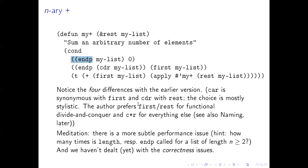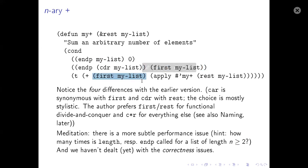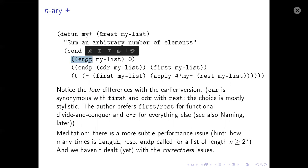If the list is not empty and the CDR of the list is empty, then there must be only one element in the list, in which case return the first element. Otherwise, pick up the first element and add it to whatever my-plus returns on the rest. This fixes two things: it enables variable argument calling, and I'm no longer using the length function. The null check is much, much cheaper than length, because length must walk to the end of the list, while null just looks at what it's got and asks: is it nil?